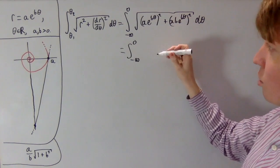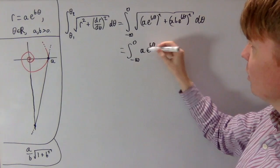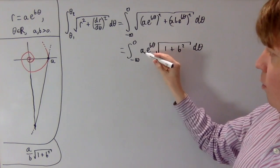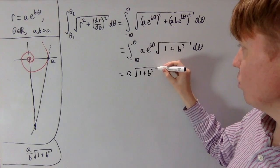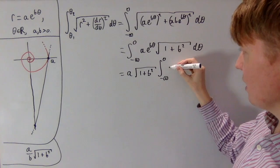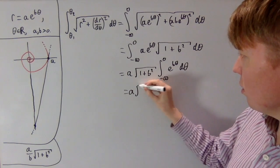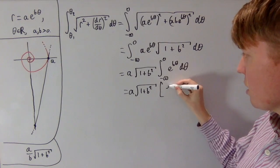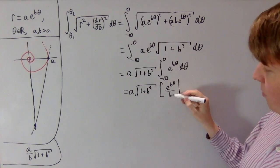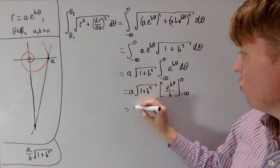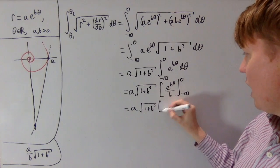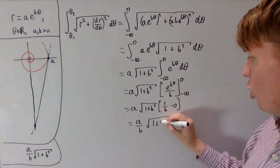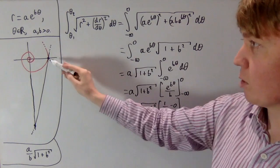We factor out a²e^(2bθ) from inside the square root. Since ae^(bθ) is positive, this comes out as ae^(bθ), leaving √(1 + b²) inside. Taking a√(1 + b²) outside the integral, we're left with ∫ from −∞ to 0 of e^(bθ) dθ. Evaluating: at θ = 0 we get 1/b, and as θ → −∞ the term goes to 0. The result is (a/b)√(1 + b²) — the length of the spiral equals the length of the tangent.